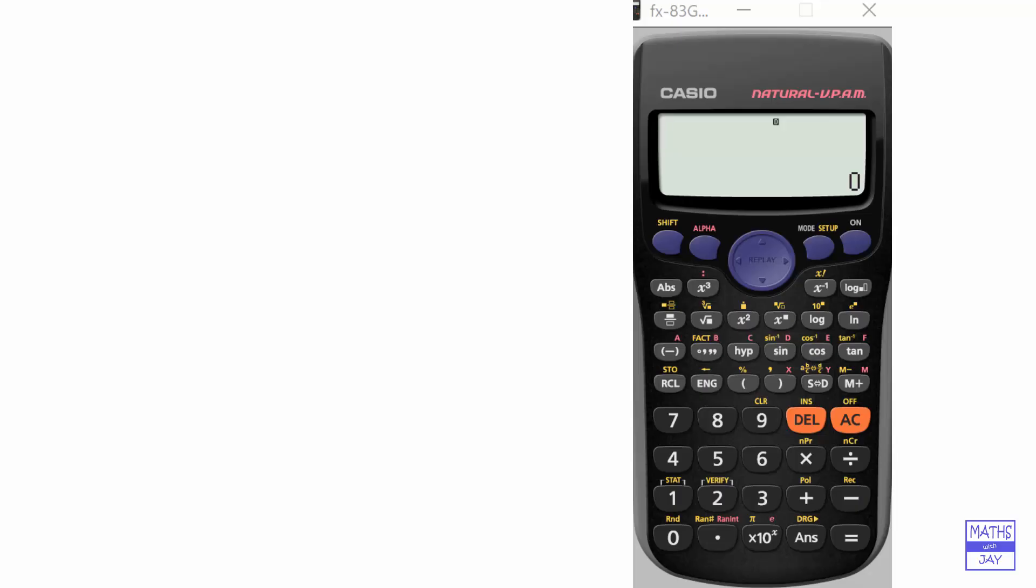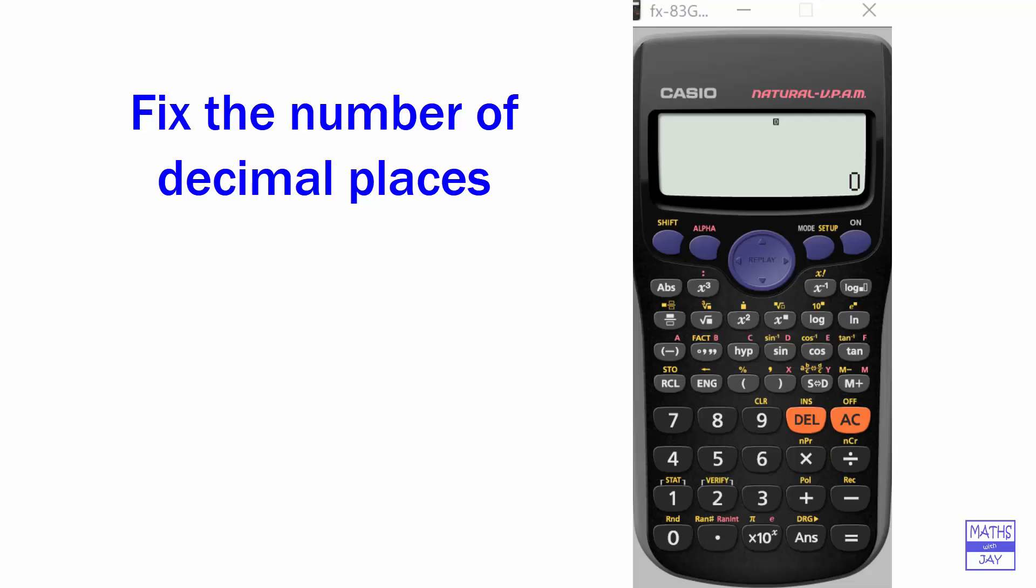Now the way we're going to do this is we're going to fix the number of decimal places because if you want something to the nearest whole number, you don't want any decimal places at all, so you want zero decimal places. So let's have a look at how to fix the number of decimal places on the calculator.